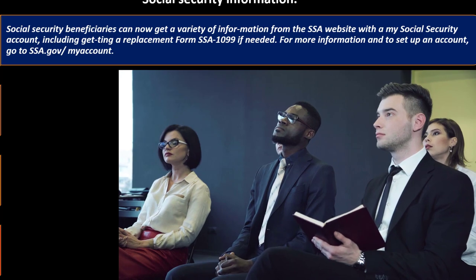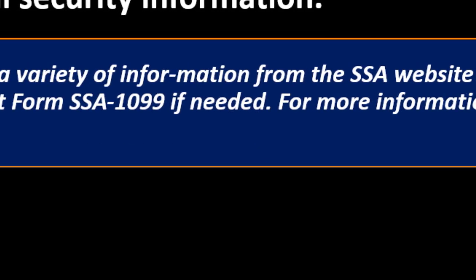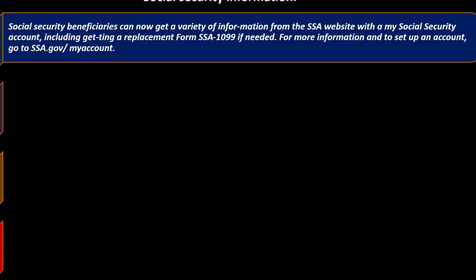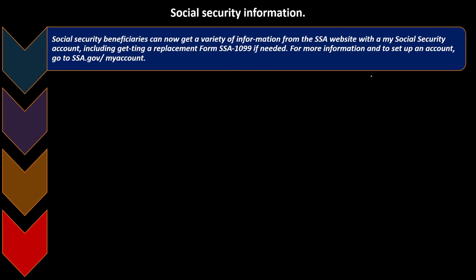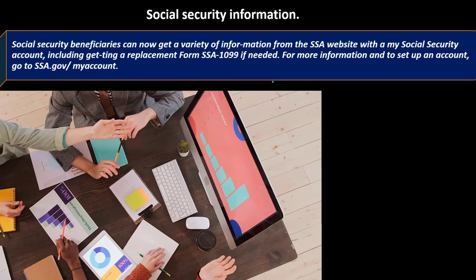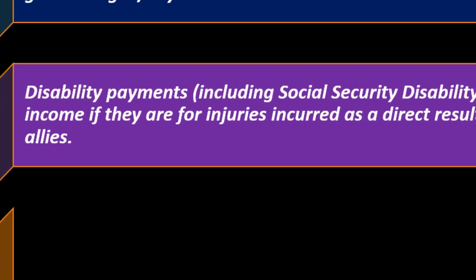Clients will ask: how is social security calculated, and what can they do regarding their working situation — for example if self-employed — to maximize their benefits? You can go to the SSA website to get more information and dig into that in more detail. With a My Social Security account you can also get a replacement Form SSA-1099 if needed. If you don't have that form, you can go there and try to obtain it. Go to SSA.gov to set up your account.